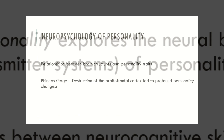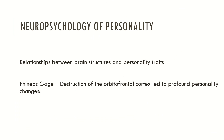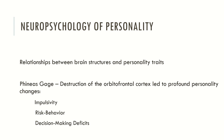Previously, relationships between brain structures and personality traits were detailed in one major case: the case of Phineas Gage, where the destruction of the orbitofrontal cortex led to profound personality changes. These changes were impulsivity, risk behavior and decision-making deficits. Clinicians started to understand that there may be some correlates between brain structures and personality traits, as the orbitofrontal cortex is an area related with decision-making and affective modulation.